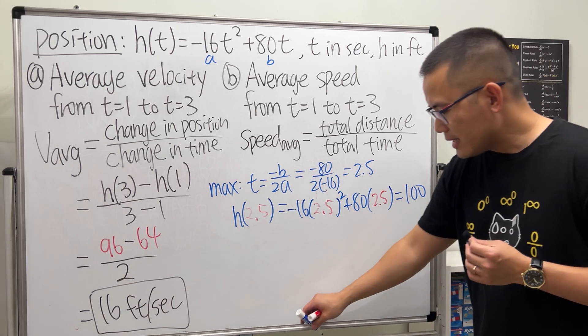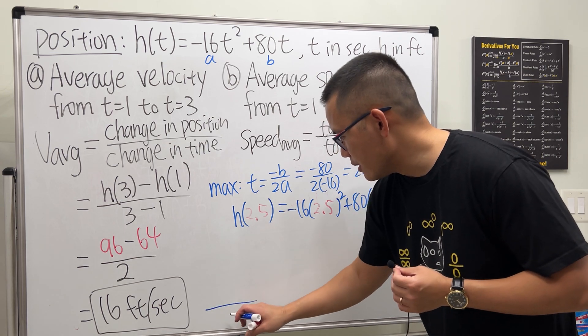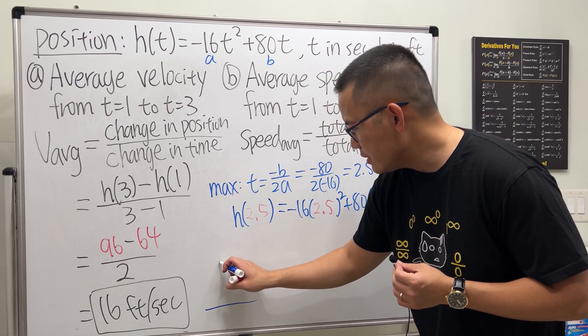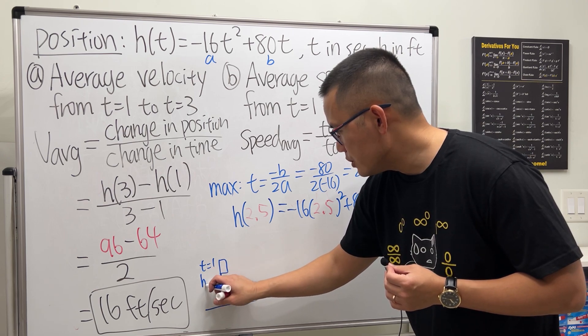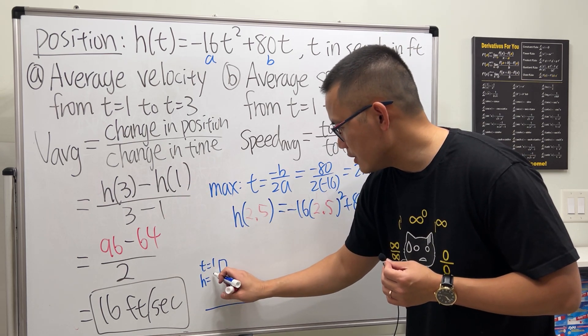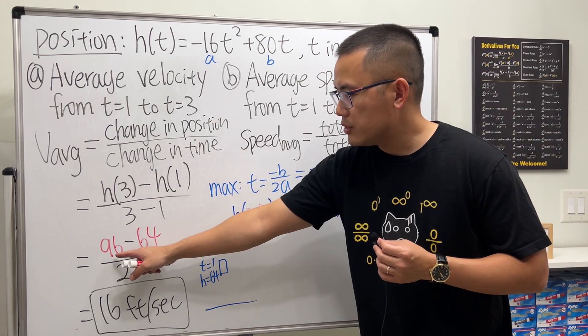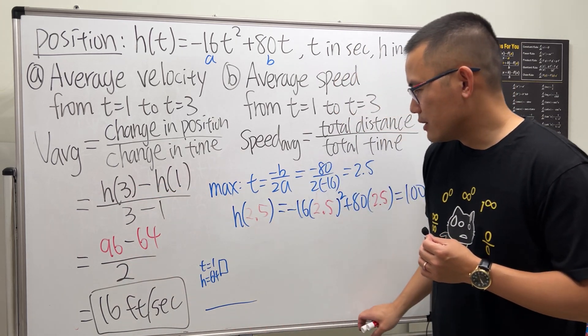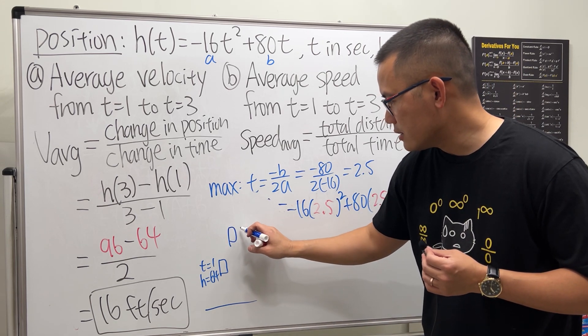So what's happening is this: you have when t equals 1—let's say this is the ground—and then when t equals 1, the h remember is equal to 64. And then when t equals 3, h is 96, so it's a little bit more up here. This is when t equals 96.